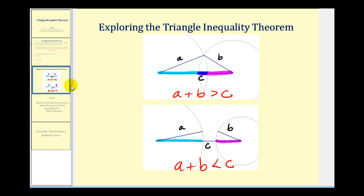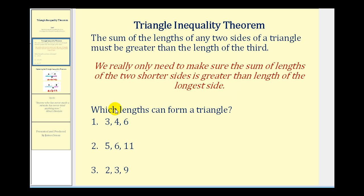So, let's go back and take a look at our examples. We want to determine which lengths can form a triangle. But again, instead of checking the sum of every two sides, we're just going to check the sum of the two shortest sides and make sure that it's greater than the length of the longest side.